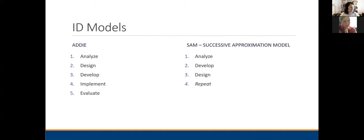Let's talk about instructional design systems and models. If instructional design is all about being systematic in how you plan instruction, we love models to make that happen. The two major models are ADDIE and SAM. You've probably heard of ADDIE — it gets trotted out a lot. ADDIE is just an abbreviation for Analyze, Design, Develop, Implement, Evaluate, whereas SAM is kind of a newcomer to the instructional design scene.